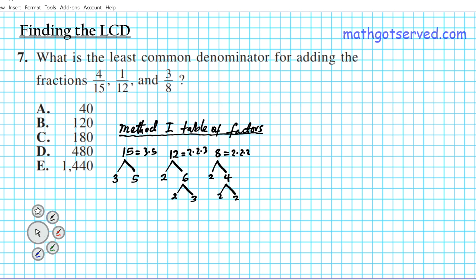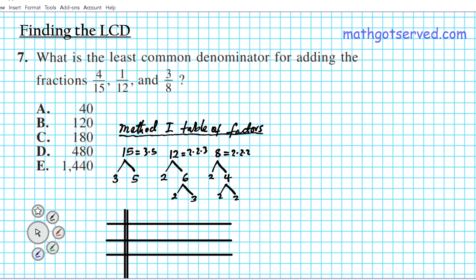Now we're going to make a table where we organize our prime factors, but there's a specific rule we implement when filling the table. The rule is: you can only place identical factors in the same column. That's how you determine what the LCD is — you can also use the table method to find the GCF. So let's start with the first denominator, 15. It has two factors: three and five. So we have the three and five columns established. When placing the factors of other numbers, they must contain three or five to go in those columns, or we place them in another column.